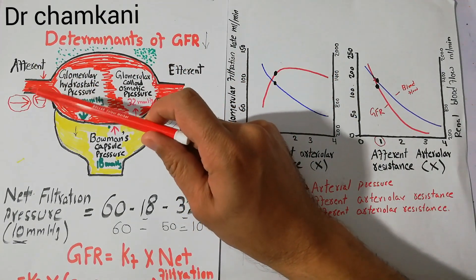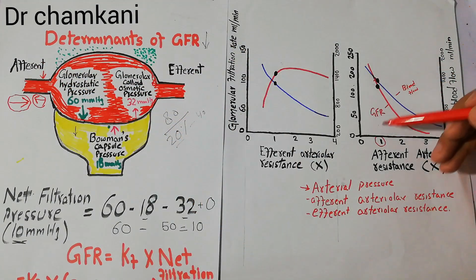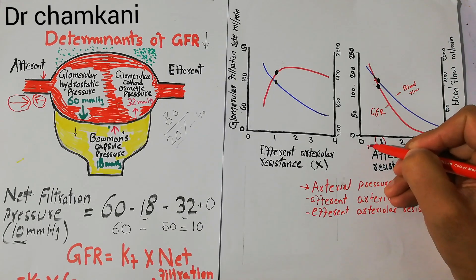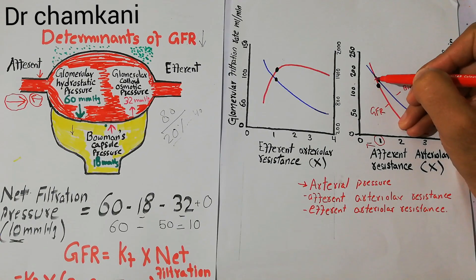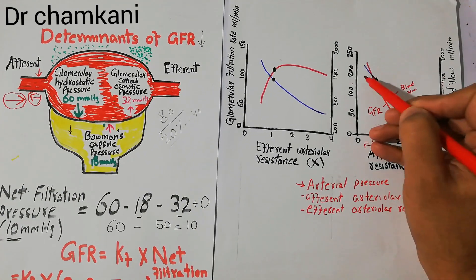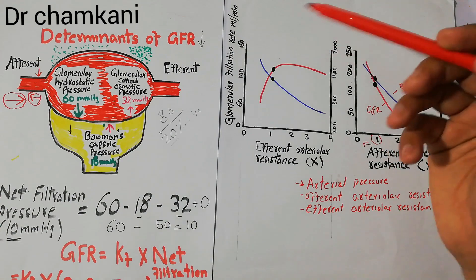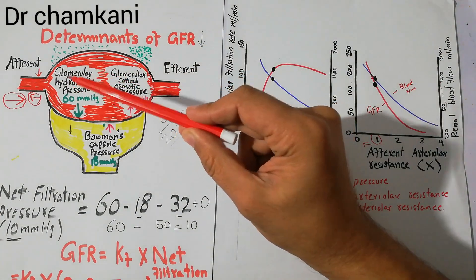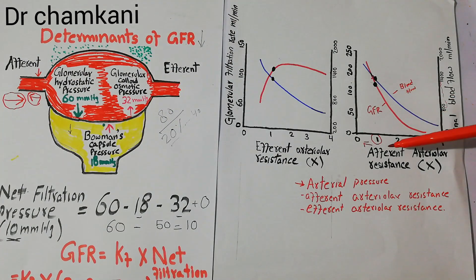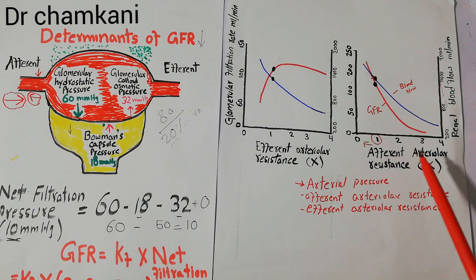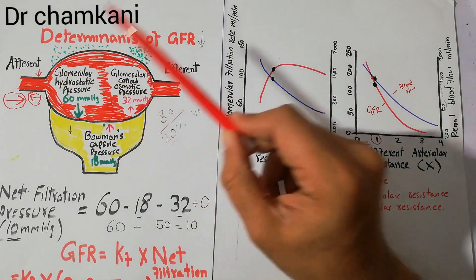If there is dilation of the afferent arterioles and the resistance decreases, the blood flow starts increasing and the GFR also starts increasing. This is due to the increase in glomerular hydrostatic pressure. So, increasing the afferent arteriolar resistance decreases blood flow and decreases GFR, while decreasing the resistance increases blood flow and increases GFR. That is the effect of afferent arteriolar resistance on glomerular hydrostatic pressure and GFR.